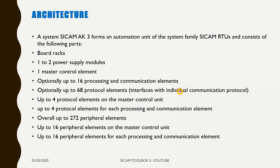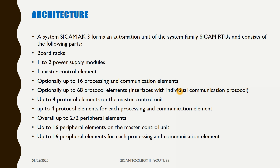It serves for the equipment of basic modules and peripheral modules. An automation unit consists of the following parts: board racks, two power supply modules, one master control element, 16 processing and communication elements, 68 protocol elements — which are used to interface with individual communication protocols like Modbus, PROFIBUS, IEC 101, IEC 103, IEC 104, IEC 61850, DNP — four protocol elements on the master control unit, four protocol elements for each processing and communication element, and overall up to 272 peripheral elements: 16 peripheral elements on the master control unit and 16 peripheral elements for each processing and communication element.